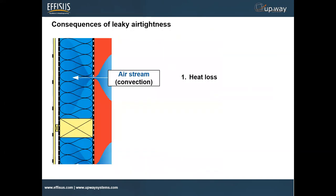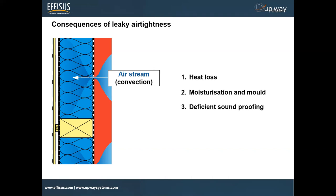I'd like to tell you about the consequences of having a leaky air tightness in your facade membrane. First: heat loss. When you have a small leak at your facade, when you are heating an inside space, you'll have loss of efficiency because the warm temperature will migrate to the outside toward the colder temperatures. Number two: moisturization and mold. Water and vapor inside will migrate through that small spot on your facade if you don't pay close attention.